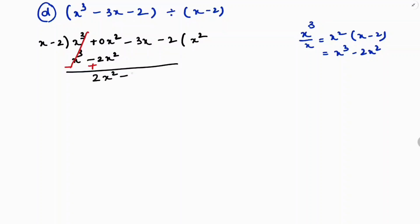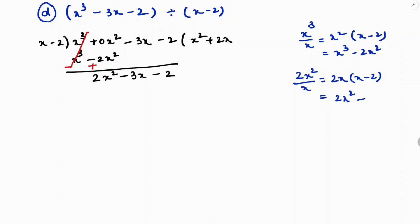Bringing down, we have 2x square minus 3x minus 2. The first term is 2x square, and the divisor's first term is x. So 2x square divided by x gives 2x in the quotient. Now multiply 2x with the divisor x minus 2: 2x into x is 2x square, and 2x into minus 2 is minus 4x, giving 2x square minus 4x.